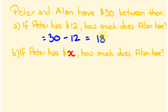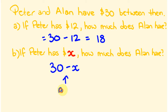Now algebraically, we don't know exactly how much Peter has, but we know between them they have 30 dollars. Instead of saying Peter has 12, we say Peter has x dollars. So instead of subtracting 12 we subtract x, meaning Alan has 30 take away x. Peter has x and Alan has 30 minus x — together that's 30 dollars.